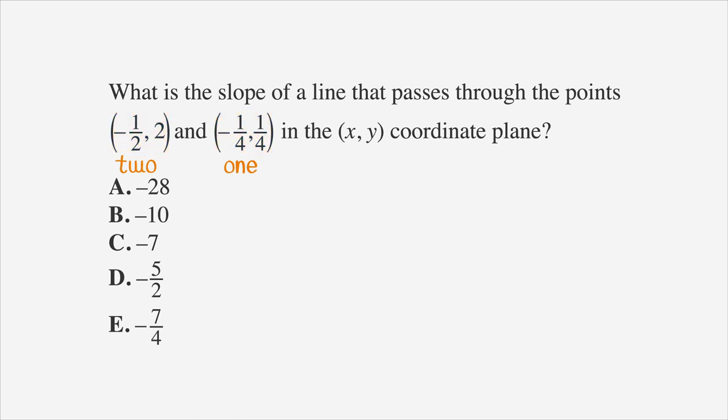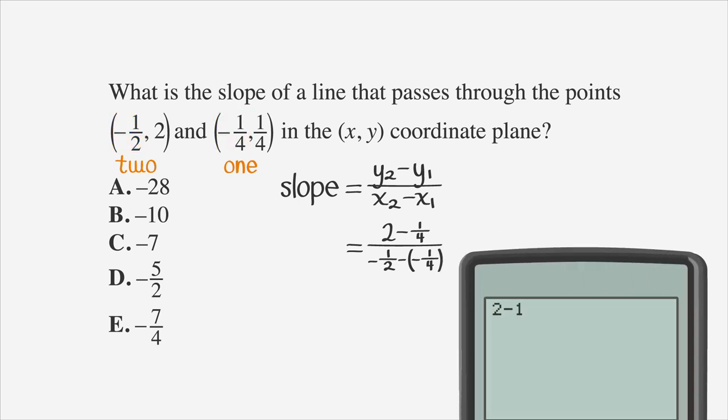Now, let's write the point-slope formula we'll use to solve the problem. Let's go ahead and put those values into the equation. y2 is 2, and y1 is one-fourth. x2 is negative one-half, and x1 is negative one-fourth. A quick check on our calculator, and we get 1.75 over negative 0.25, which the calculator tells us is negative 7. Boom! Choice C is our answer.